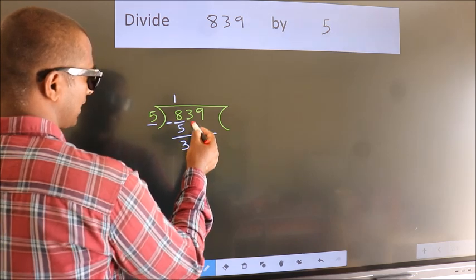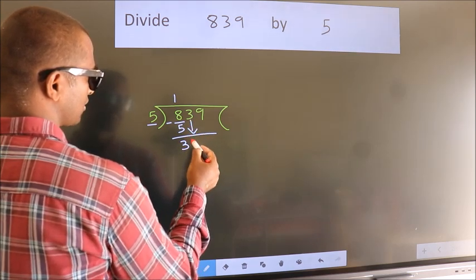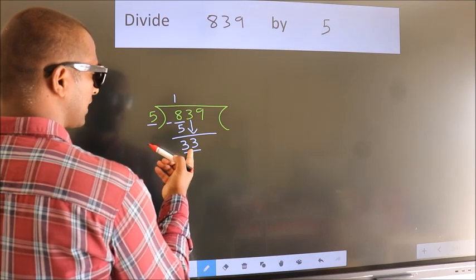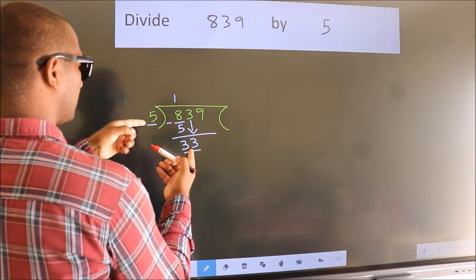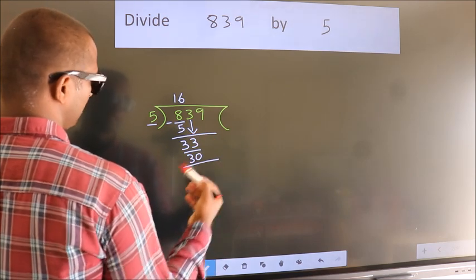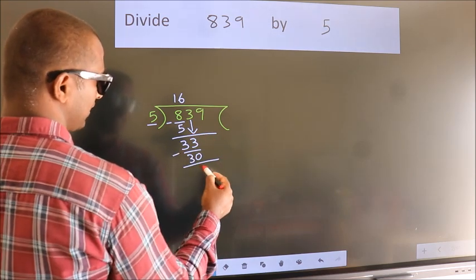After this, bring down the next number. 3 down, so 33. A number close to 33 in the 5 times table is 5 times 6, which is 30. Now we subtract and get 3.